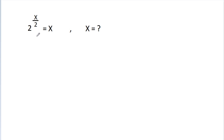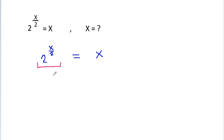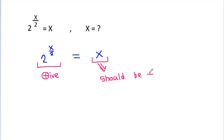In this video, we have been given that 2 power x by 2 is equal to x, then x is equal to what? So, we have 2 power x by 2 is equal to x, and 2 power x by 2 it will be positive, that means x should be positive.